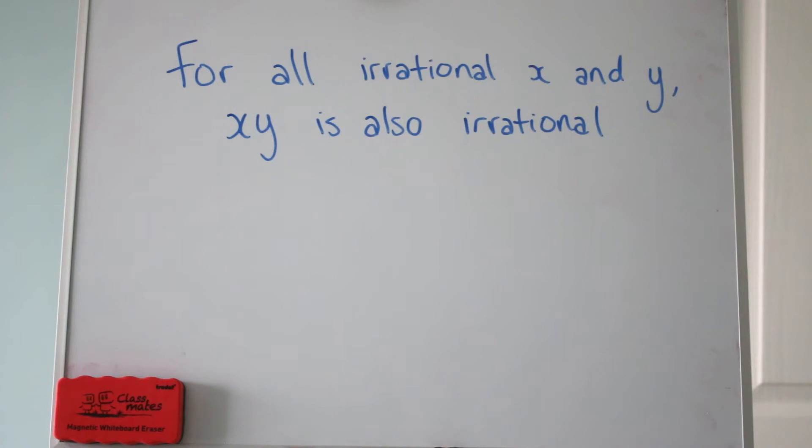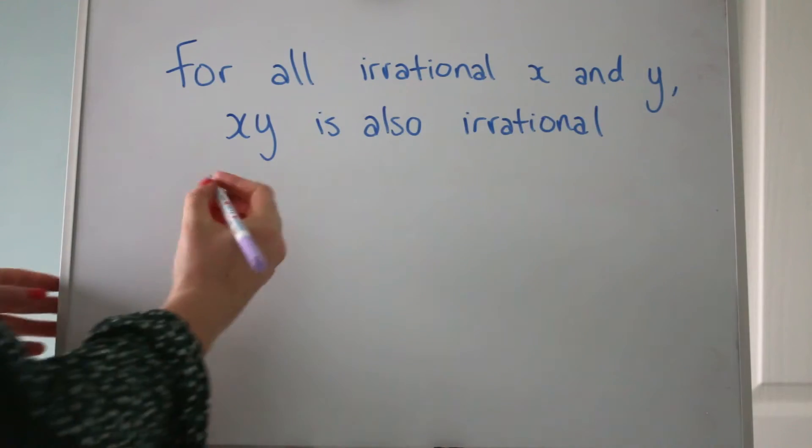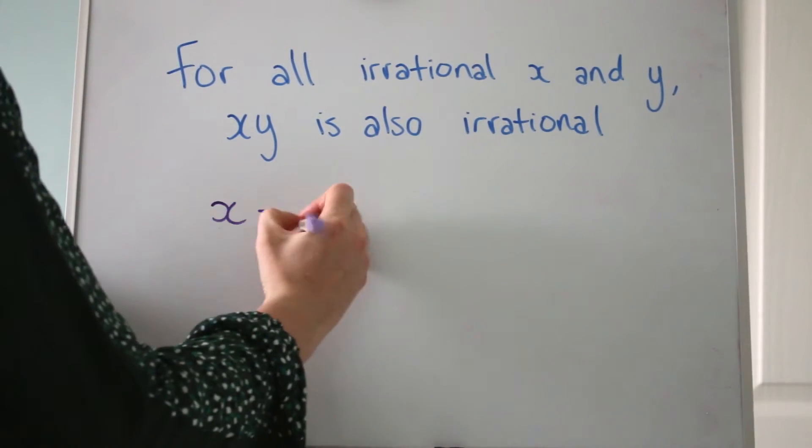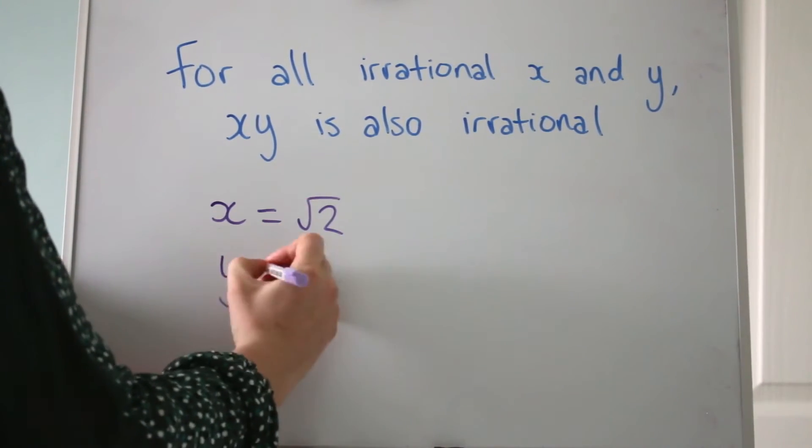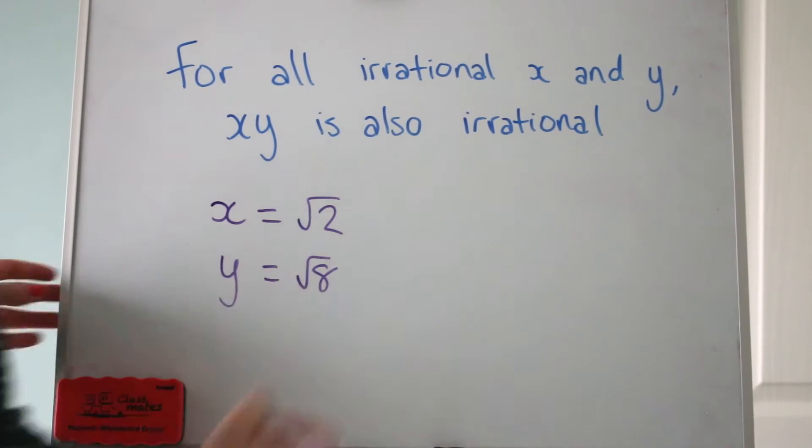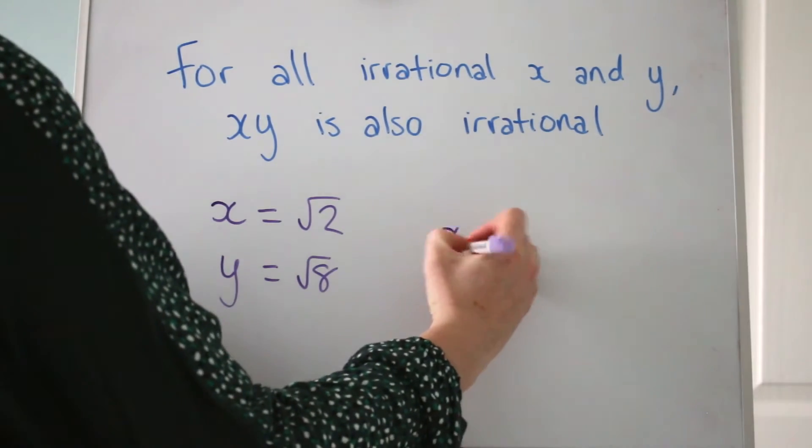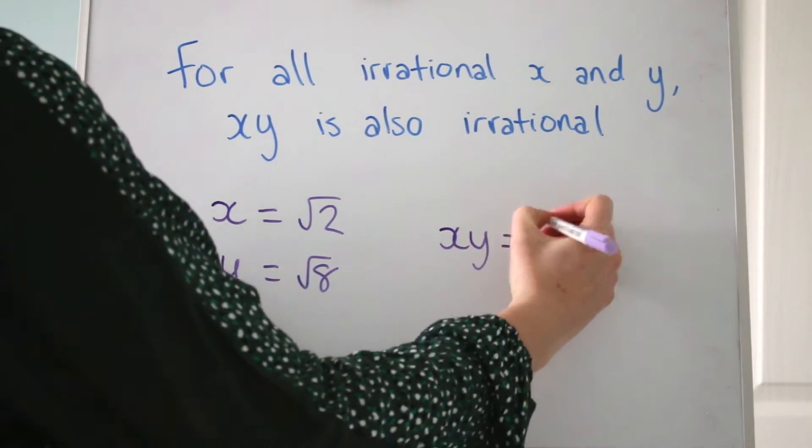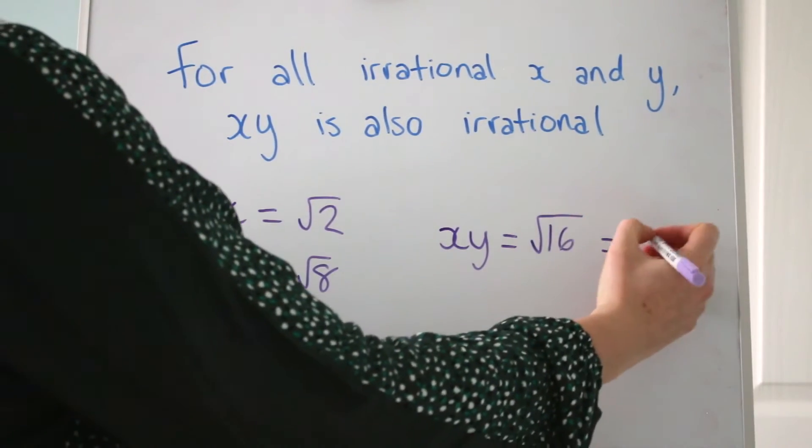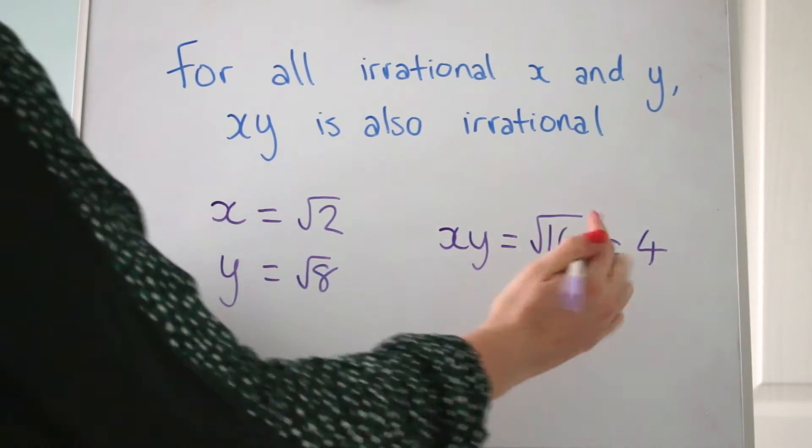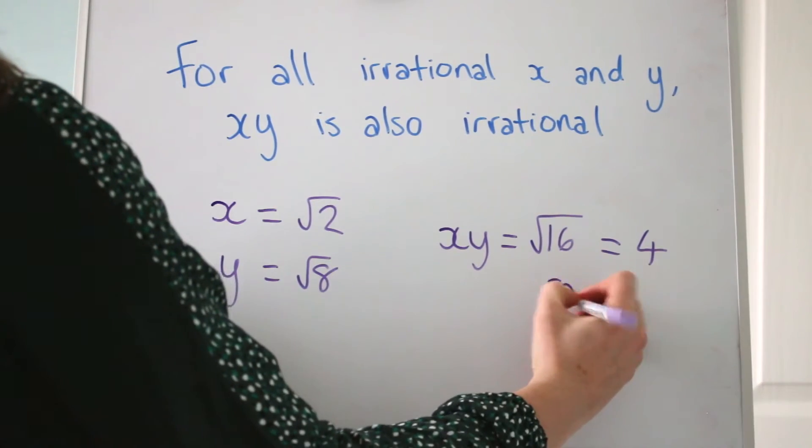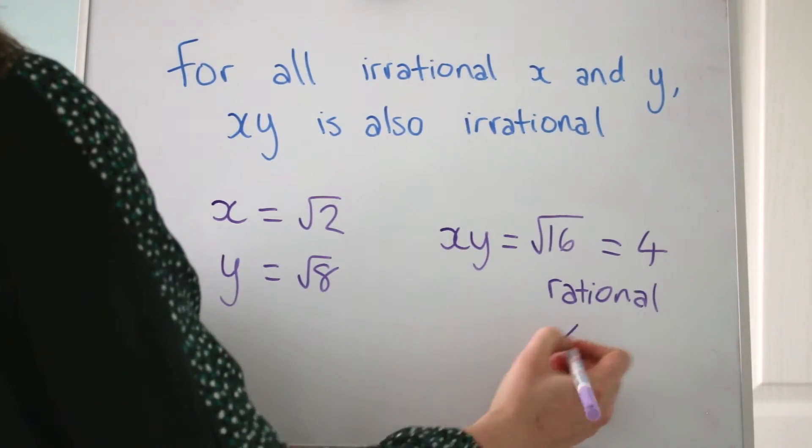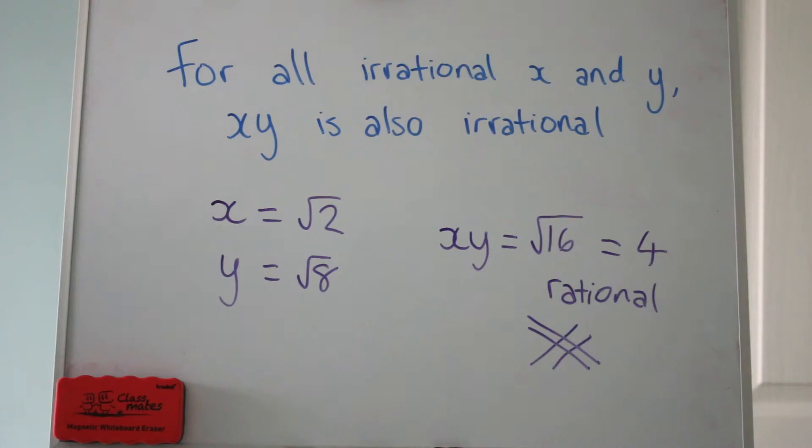We're looking for two irrational numbers x and y, and to disprove this, we want to find that the product of those two irrational numbers is rational. Have a go, pause the video. There are lots of different examples you could use here, but the one that I came up with was if x is root 2, y is root 8, those are both irrational numbers. But when we multiply them together, we get root 16, and that obviously is 4, which is rational. So that breaks it, and that's our counter example.